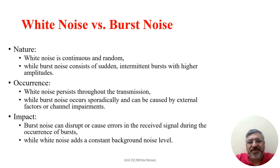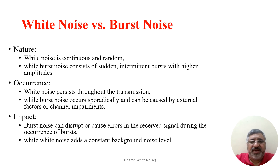Comparing white noise with burst noise: white noise is characterized by its continuous and random nature, whereas burst noise is distinguished by its sudden and intermittent bursts occurring at irregular intervals. White noise is often present throughout transmission, whereas burst noise occurs irregularly and can be attributed to external factors or channel impairments. Burst noise has the potential to interrupt or introduce errors in received signals, whereas white noise constitutes a constant level of background noise.